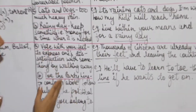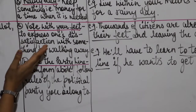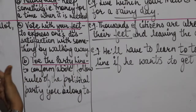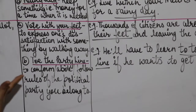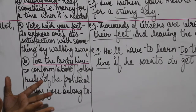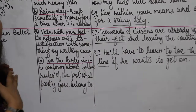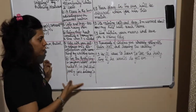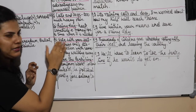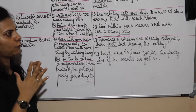Now, idioms related to elections. The first idiom is 'vote with your feet' — V-O-T-E. Its meaning is: to express one's dissatisfaction with something by walking away. When we show our displeasure or dissatisfaction with something by distancing ourselves from it, that is called 'voting with your feet.' Though the word says voting, it cannot literally happen with feet — but we can deduce the meaning from context.